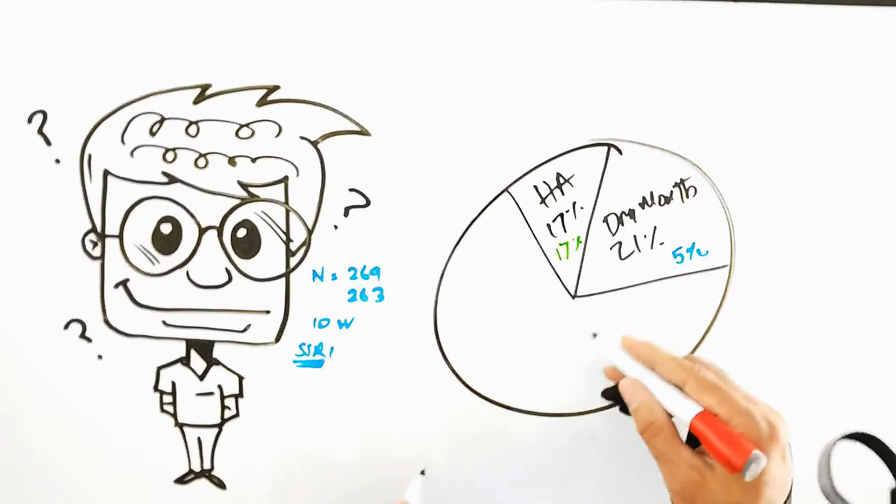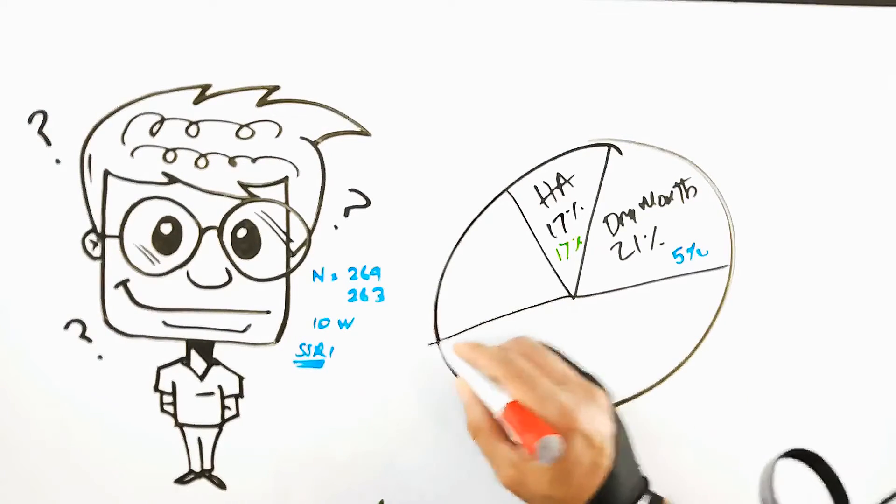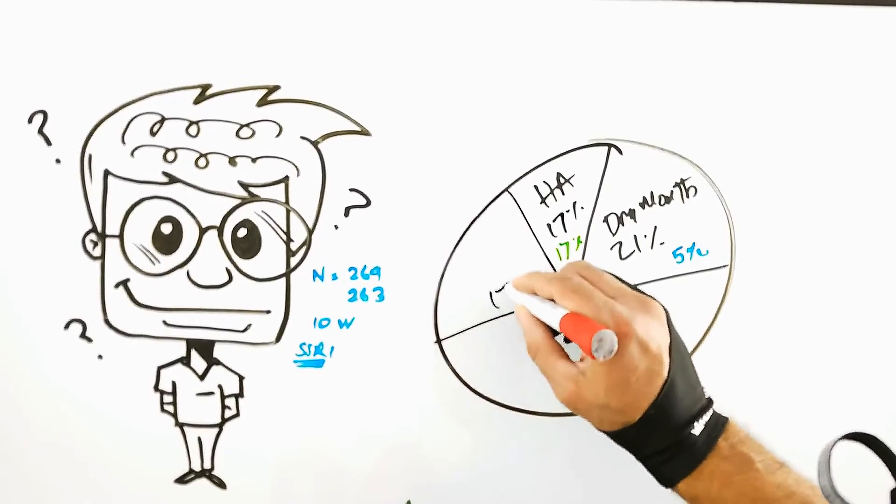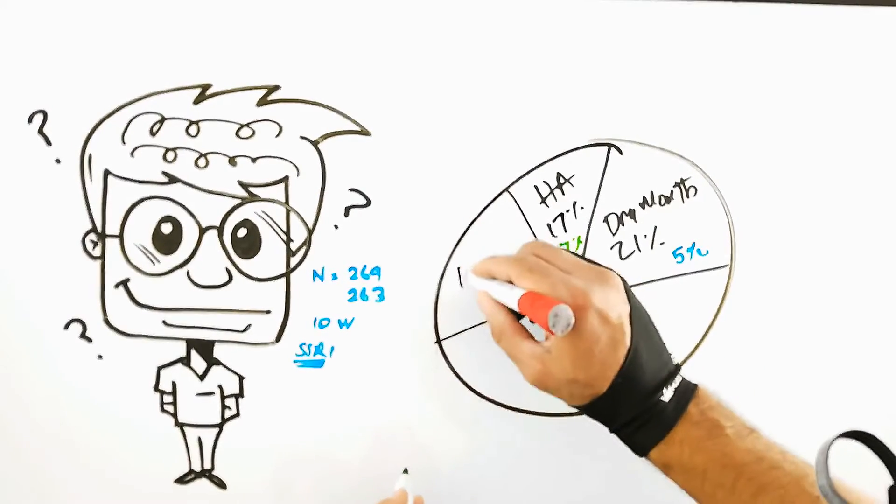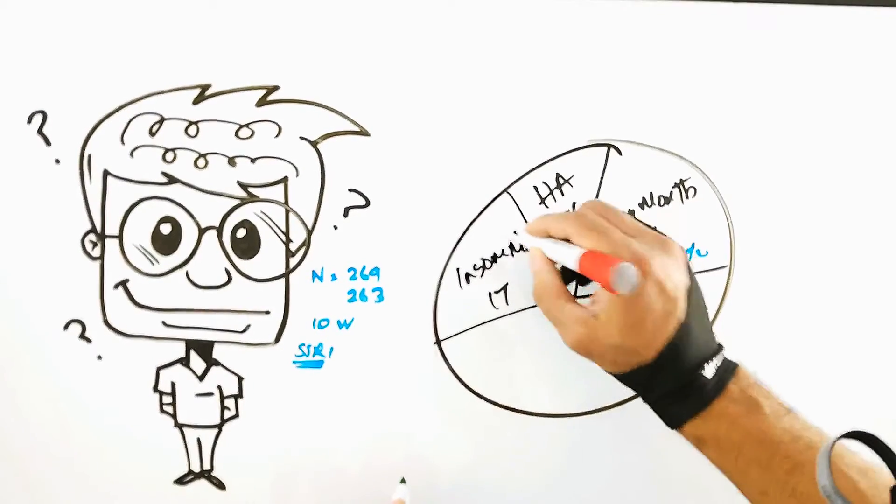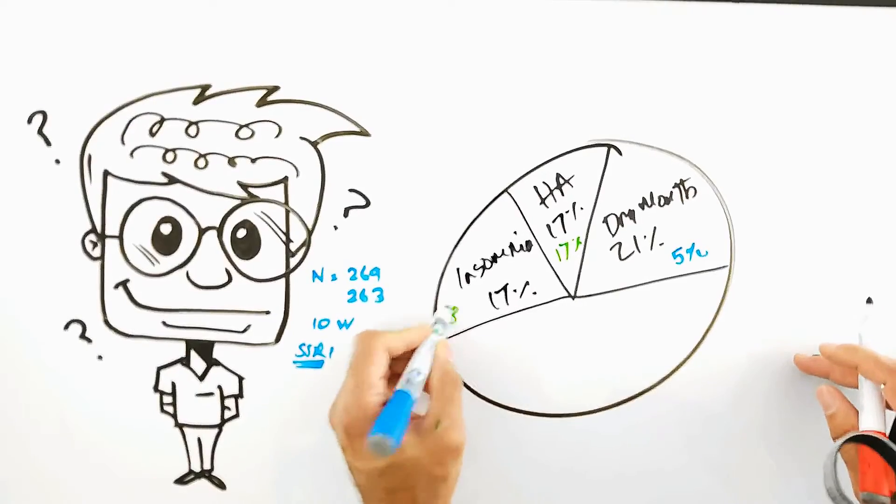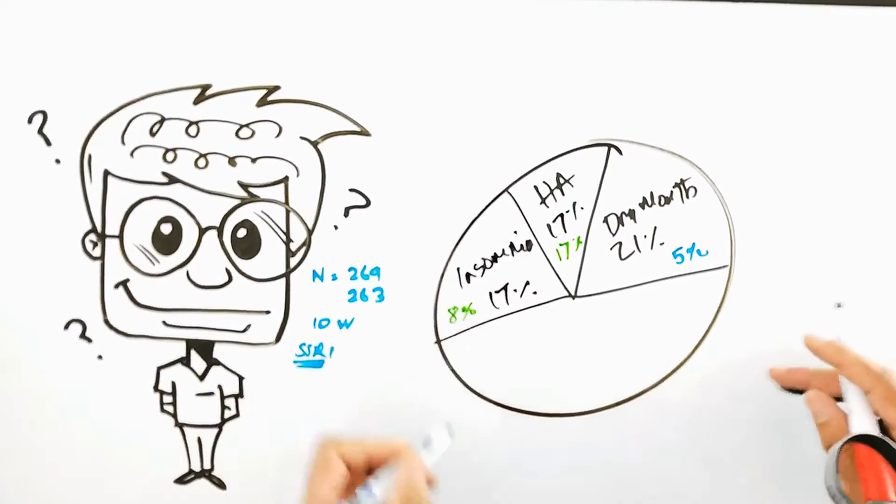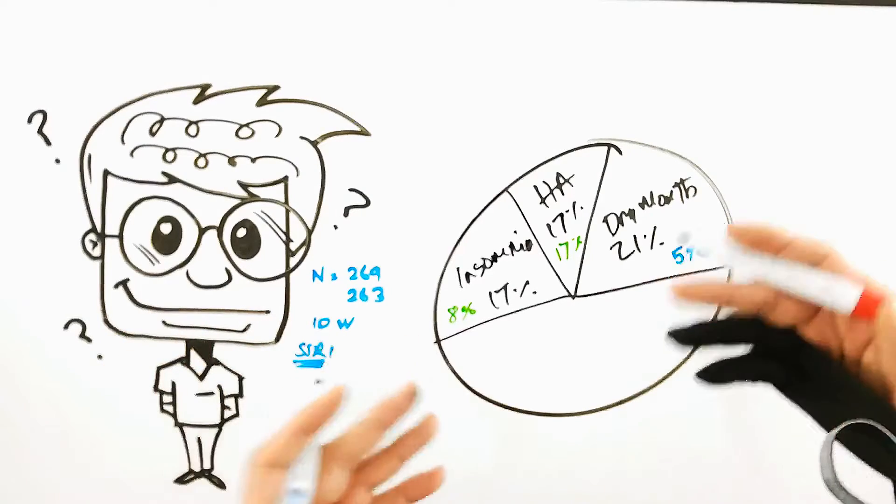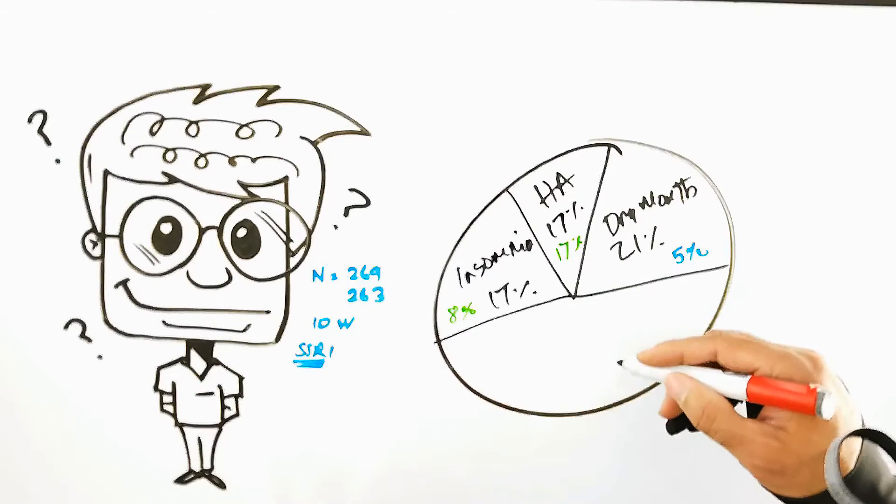The next big one, also at 17%, was insomnia—not able to fall asleep. Now again, to put that in perspective, 8% of people just taking the placebo sugar pill also complained of insomnia. So to me, the real incidence of insomnia as a consequence of Strattera is more like 10%.